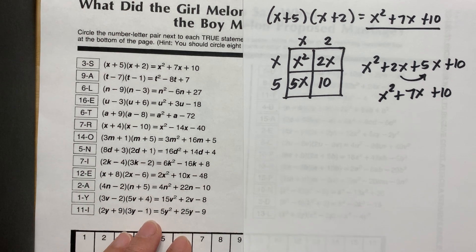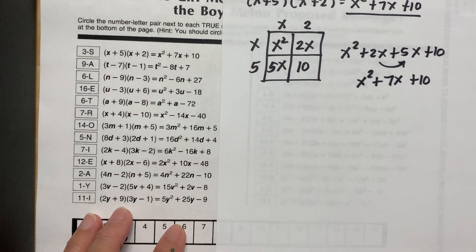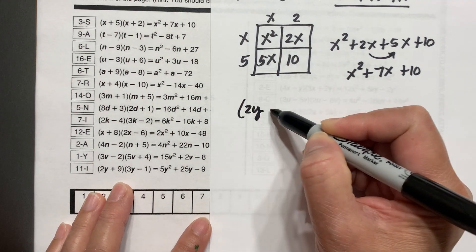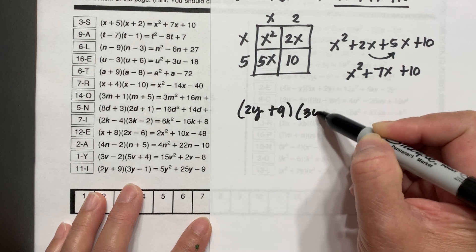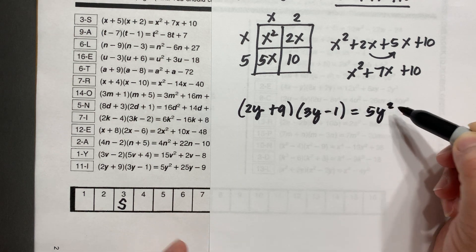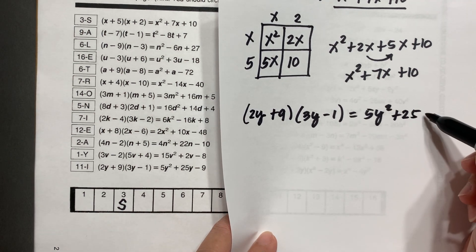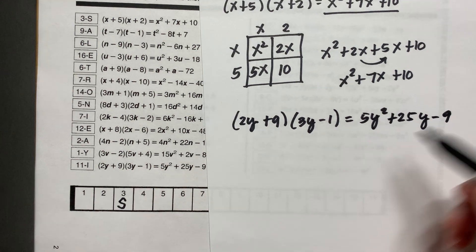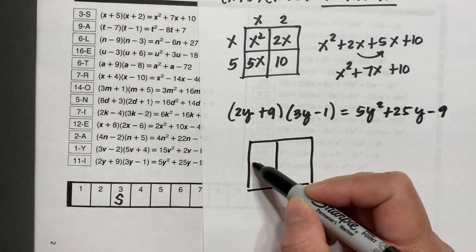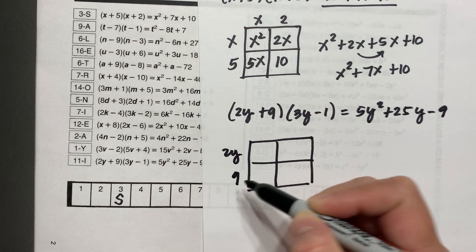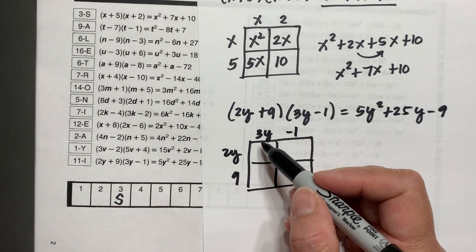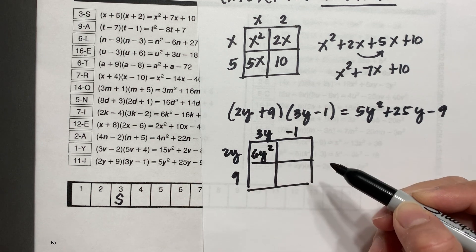Let's see number 11. We have (2y + 9)(3y − 1) is equal to 5y squared plus 25y minus 9. We will multiply this using the box. We have 2y plus 9, and 3y minus 1.